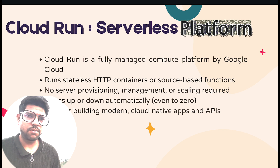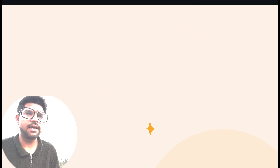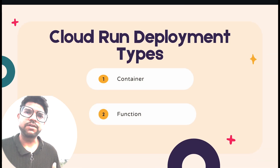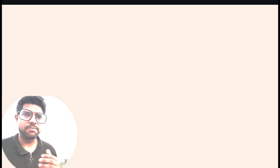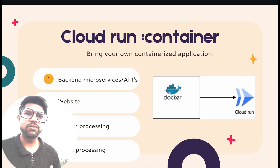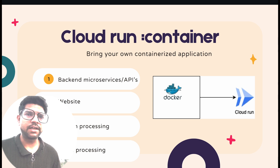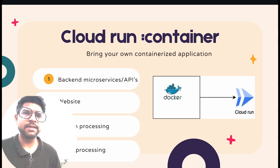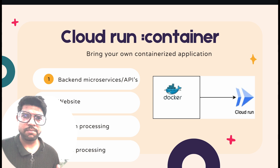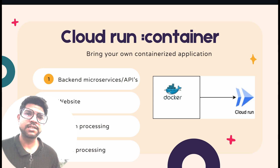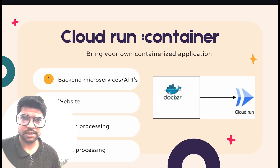We have two different types of deployment: container and function. For the container, you need to define your container image and then deploy it to the GCP platform. We have two different types: service and job. You are writing your code, creating a container image, and then that image is deployed. You can define APIs, microservices, web applications, stream processing, or batch processing systems within Cloud Run as a service or as a job.